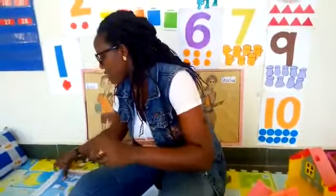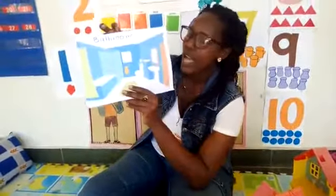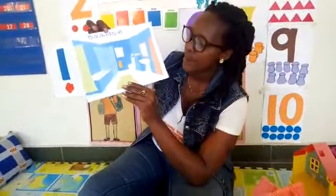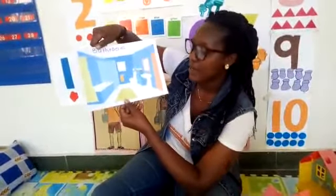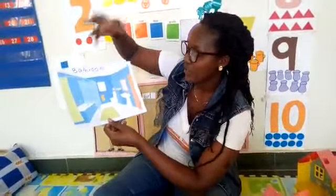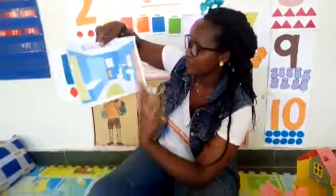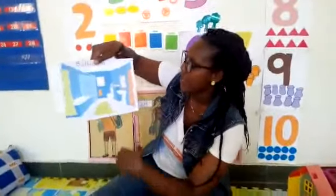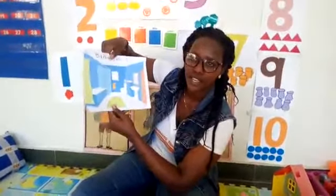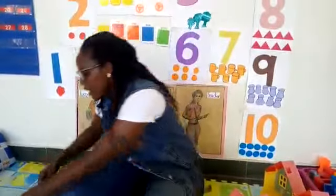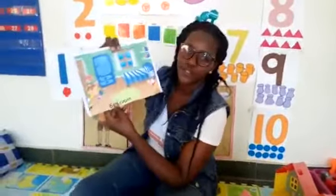Next we have a bathroom. A bathroom is a place where we go to bathe and shower. You can also see the toilet. A toilet is a place where we go for calls of nature. And you see a towel here — you use the water, you clean yourself, and you dry yourself with the towel.